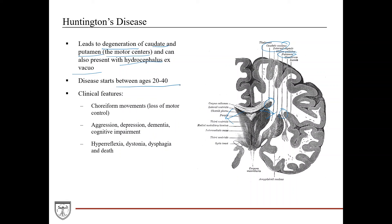This disease starts between ages 20 and 40. Clinical features include those signature choreiform movements — essentially loss of motor control due to degeneration of these structures and loss of GABA output to inhibit motor movement. These patients also develop aggression, depression, dementia, and cognitive impairment, and can present with hyperreflexia, dystonia, and dysphagia. Unfortunately, this disease leads to premature death.